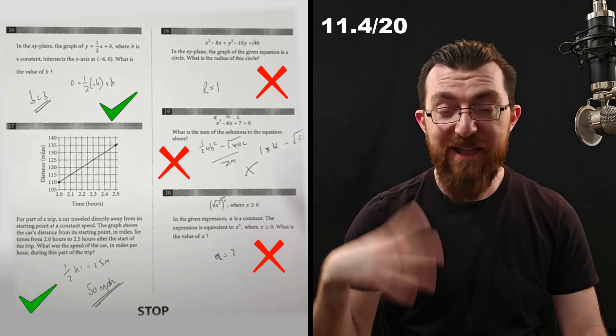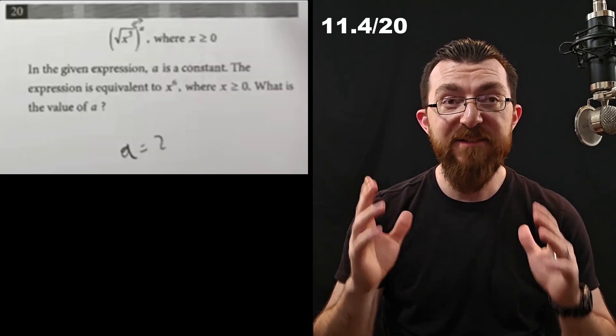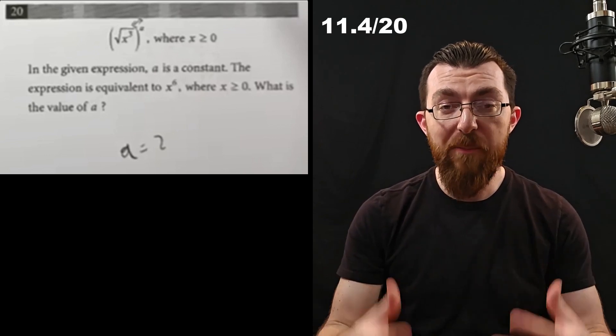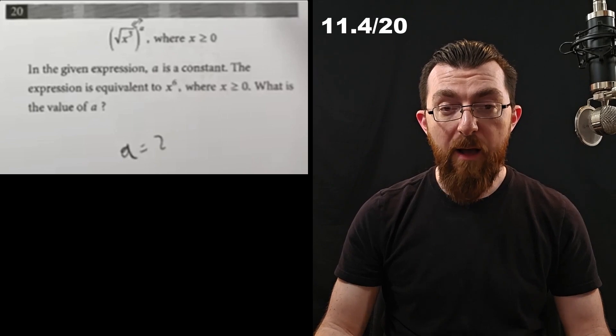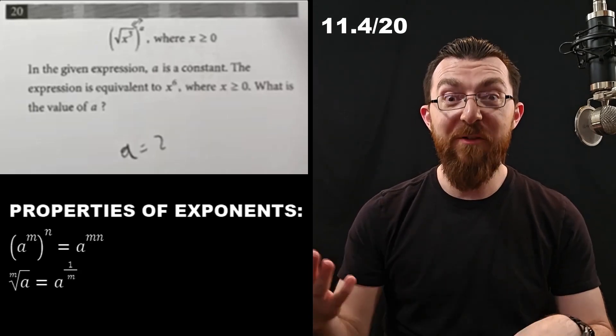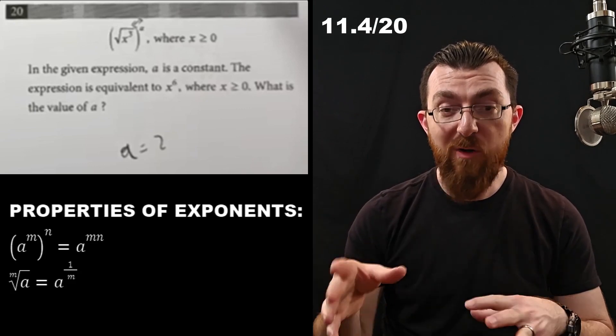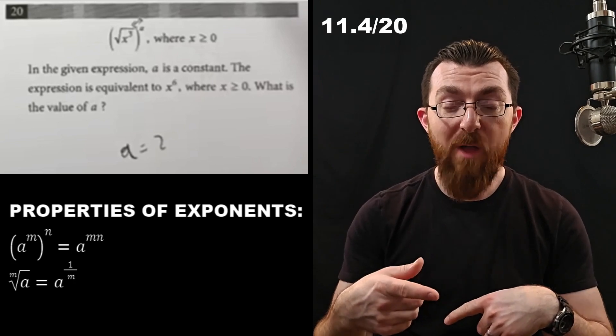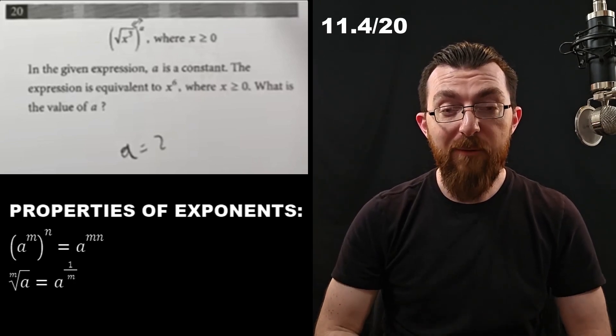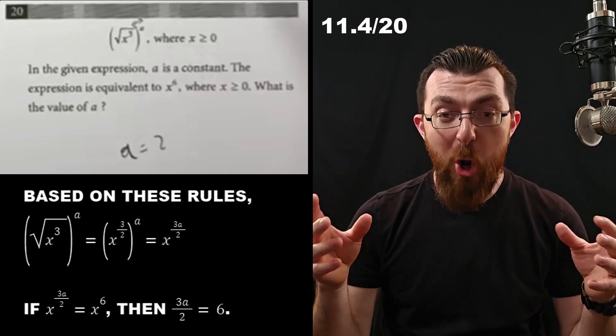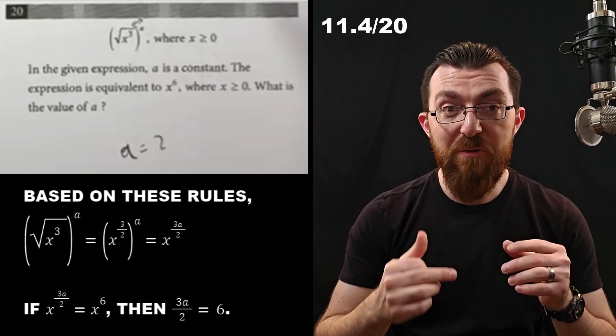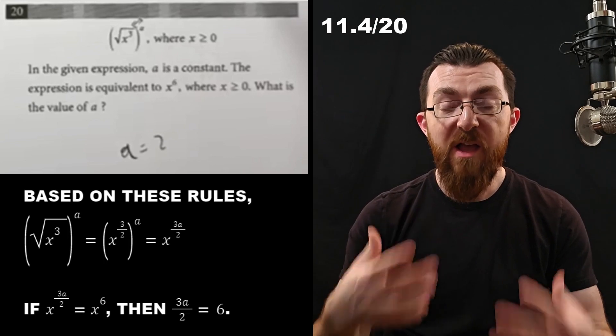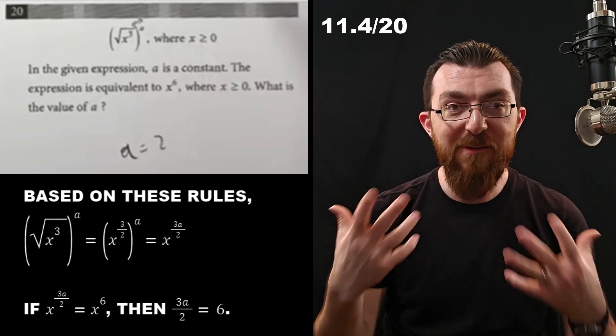Okay, moving on. We've got a very complicated exponential expression, and it says that a is constant, and the expression is equivalent to x to the 6th. Basically, this is testing students on how well they know the properties of exponents. And a couple of them would be when you raise an exponential expression to another exponent, then those two exponents multiply together. And also that the way to change a radical into an exponent is just that you have the reciprocal of that number, that that exponent for the radical just becomes your new exponent. Anyway, when you combine all of that in that way, you end up with x to the 3 halves a. And if that's equal to x to the 6th, then by what's called the 1 to 1 property, 6 must be equal to 3a over 2, and so a equals 4.